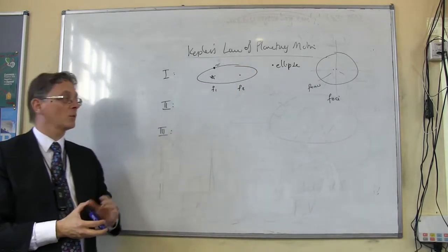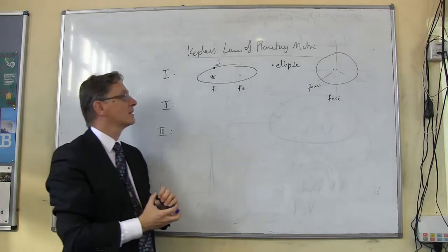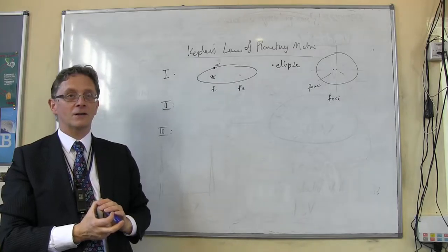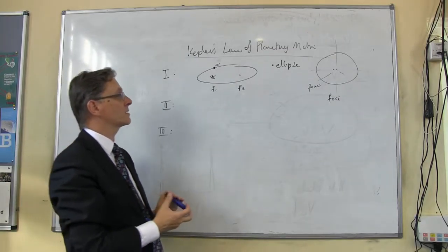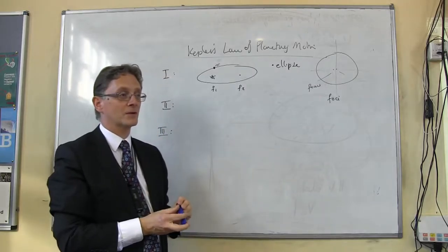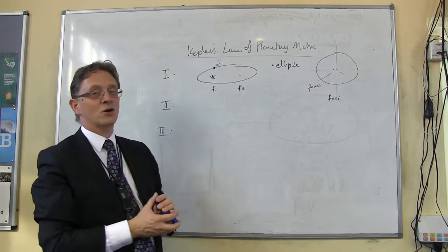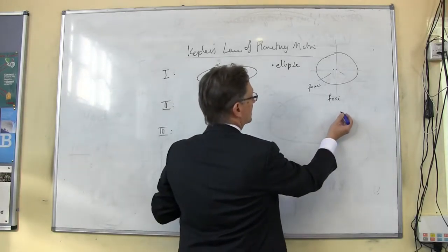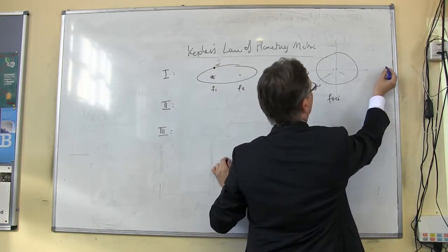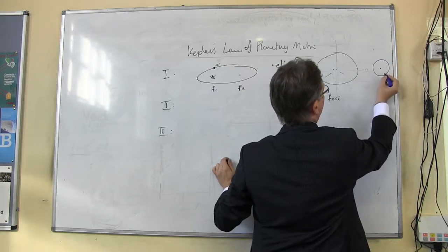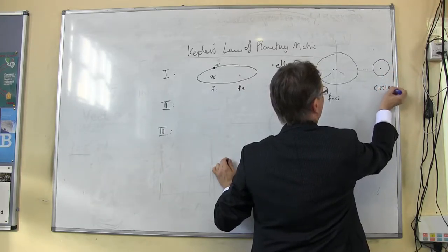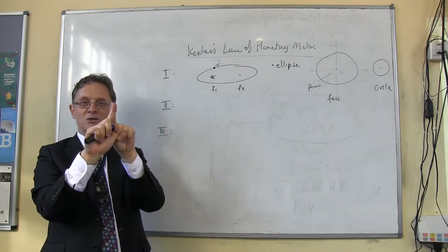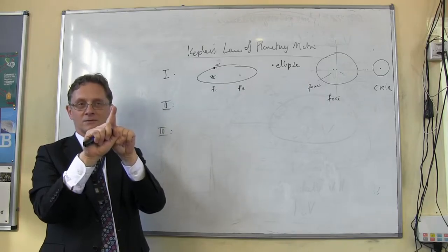The sun is always at one focus. So if you want a snappy sentence: the orbits of planets are all ellipses with the sun at one focus. That's what Kepler discovered. If you put the two foci on top of each other, you get the special type of ellipse called a circle. A circle is where the two foci are on top of each other, and you get the same measurement in any direction.